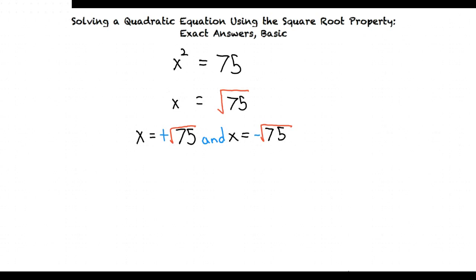Or we can write it as x equals plus or minus square root of 75. This is because if we square positive radical 75 or if we square negative radical 75, we get the answer to be 75 in both cases.